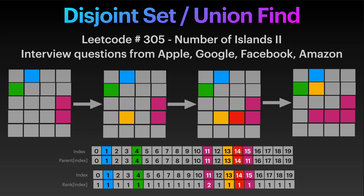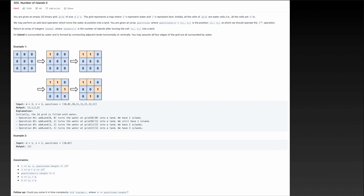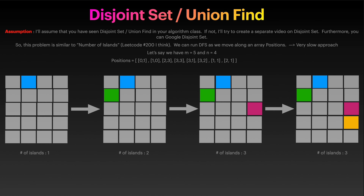Welcome to my YouTube channel. For this video we will talk about problem 305 - this is the second iteration of Number of Islands, and we will solve this problem using disjoint set, also known as union find. I want you to pause this video to read the problem statement. I'm going to make the mild assumption that you have seen disjoint set or union find in your algorithm class; if not, I want you to Google this and try to get the big picture of what this is about.